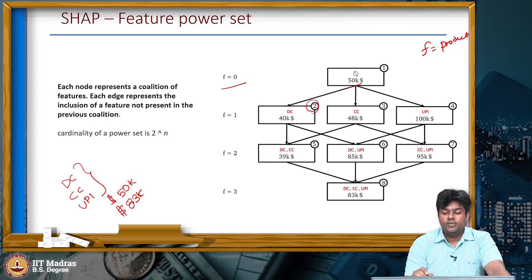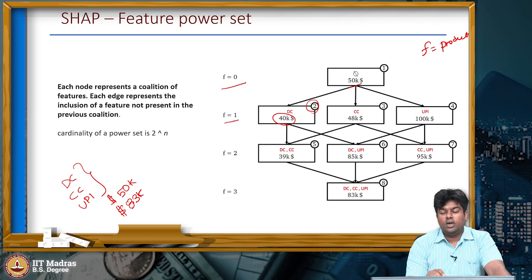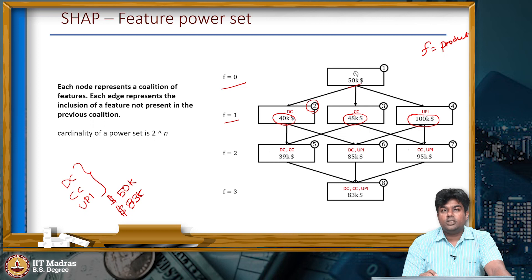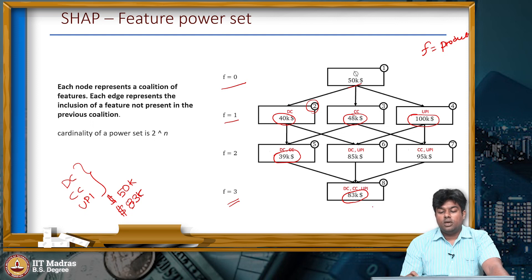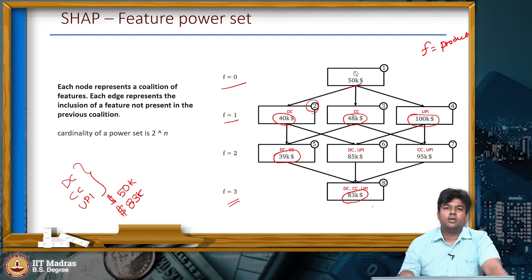As we traverse to node 2, we introduce the debit card product and observe that the profit margin reduced to 40K. At feature level F1, we also understand how other products impacted the profit margin. Moving to the next level, we try to understand how two products run in coalition and what the profit margin is using those two products together. For example, node 5 shows that using debit card and credit card together, the profit margin is 39K. Finally, at level 3 we see the profit margin using all three products. This feature power set gives an overall picture of how each individual product performed.